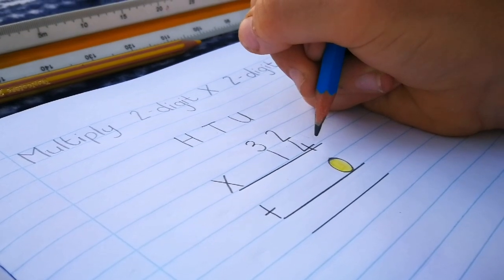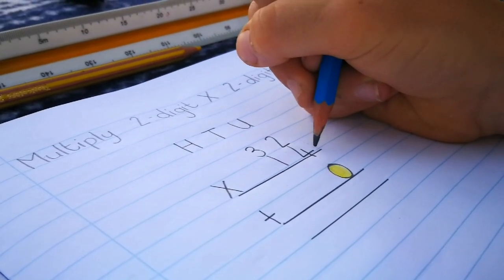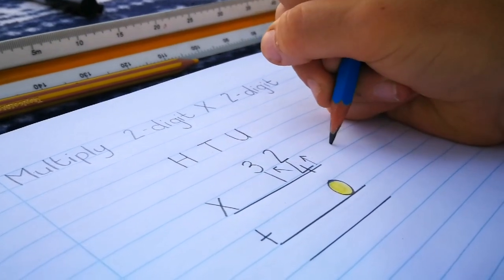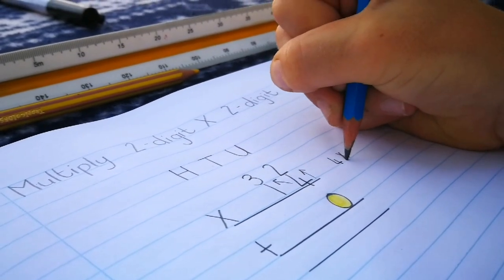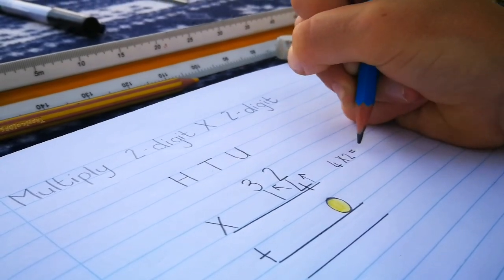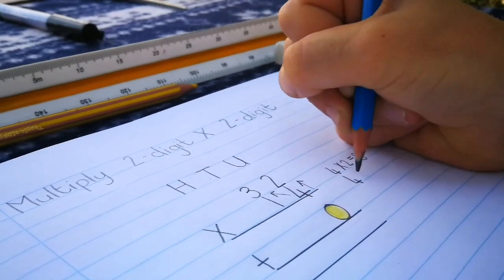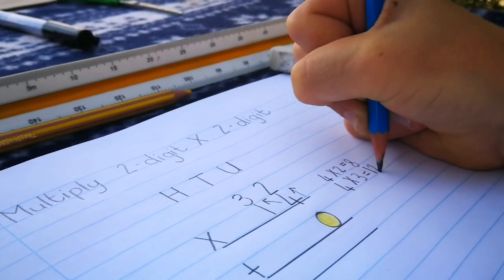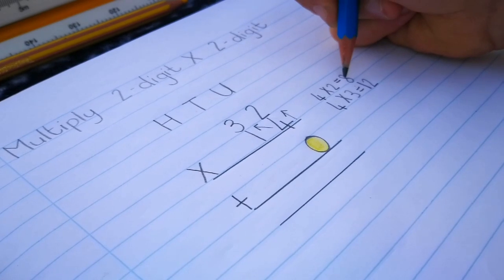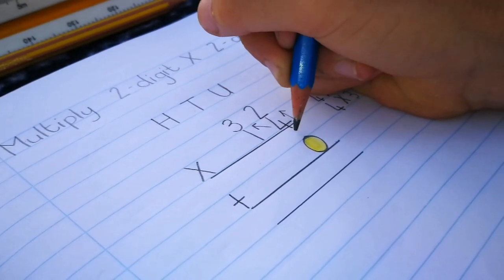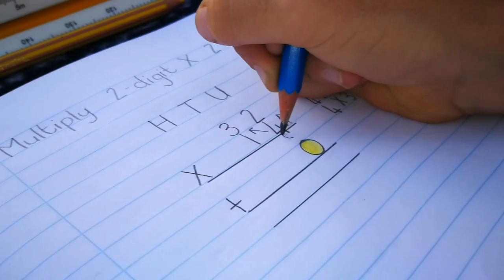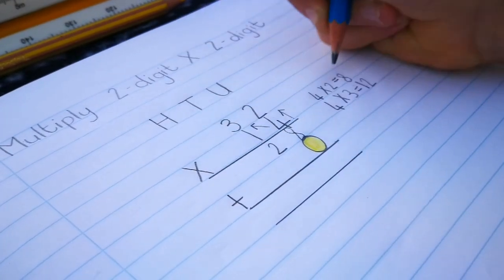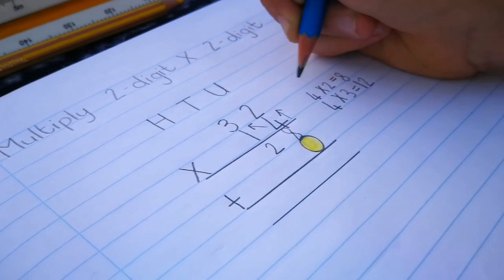We first go into times the units column. 4 times 2, and then 4 times 3. Right, let's write it on the side. 4 times 2 equals 8, and 4 times 3, 12. You need to put the 8 under or on top of the egg. And you put the 2 under the 1, and the 1 you put it in the hundreds column.